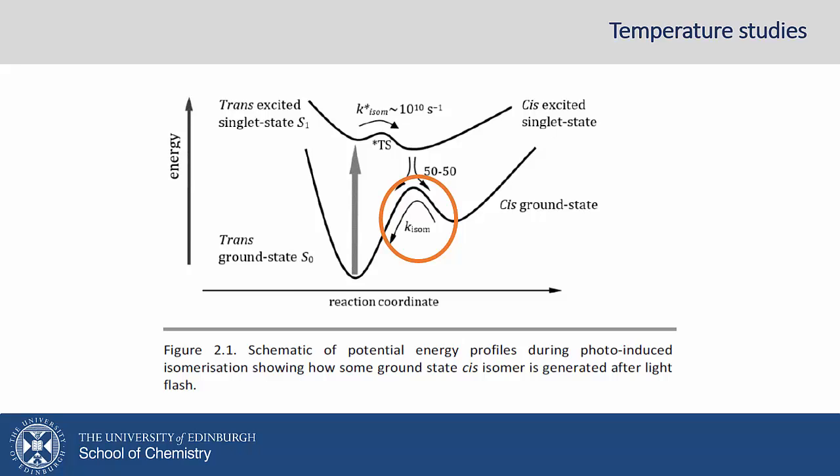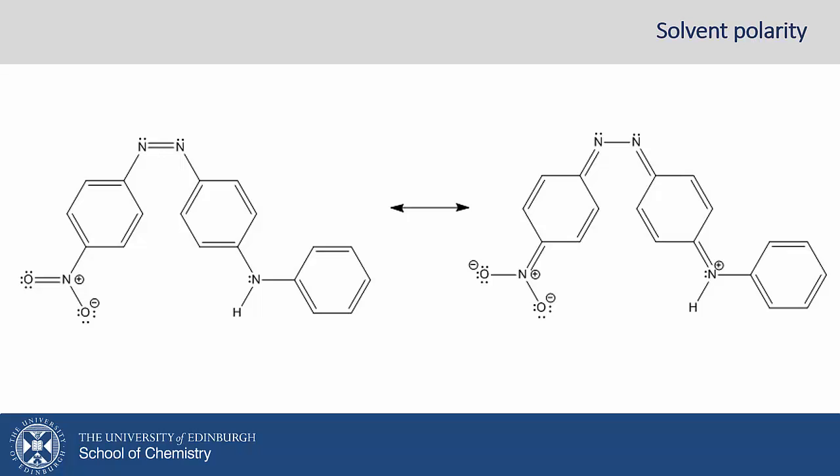One other interesting aspect is that these molecules are highly conjugated, which of course is responsible for their intense colour. Two resonance forms are shown. How will increasing solvent polarity affect the stability of each of these resonance forms? And what does that mean in terms of double bond strength? This in turn will affect cis-to-trans isomerisation. So you will have a chance to explore disperse orange in different solvents and see if your predictions are borne out.